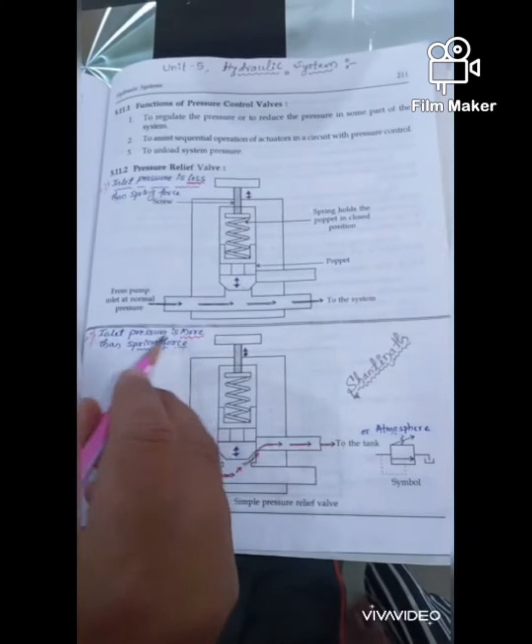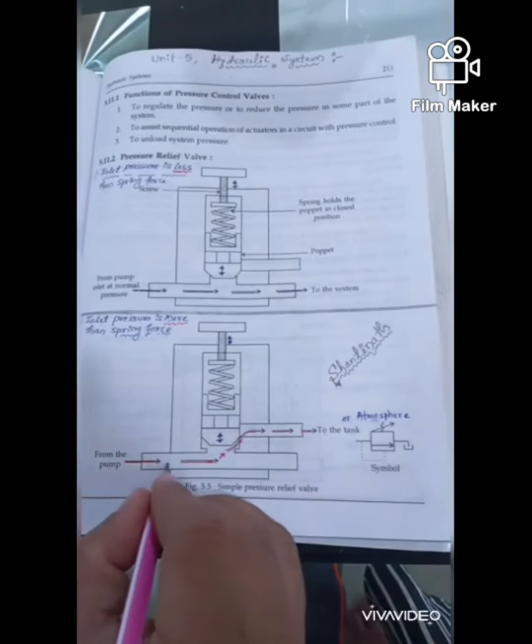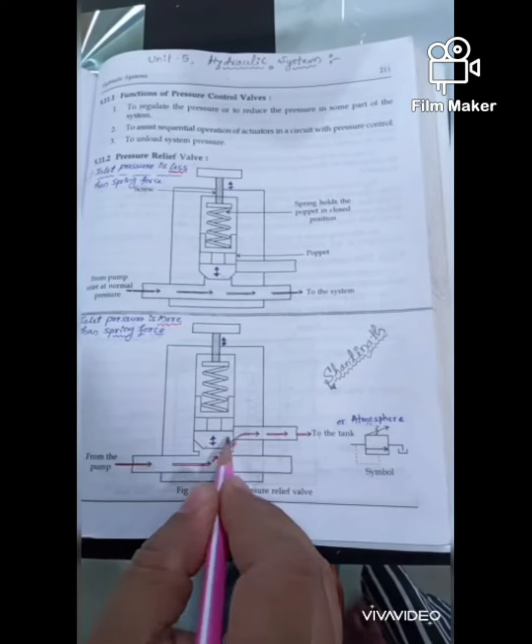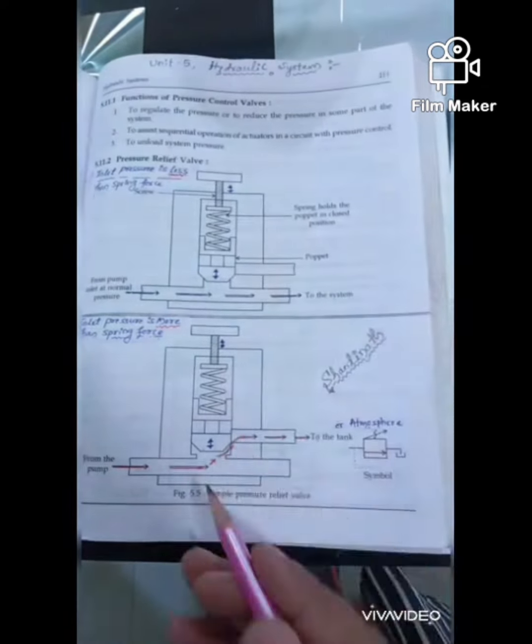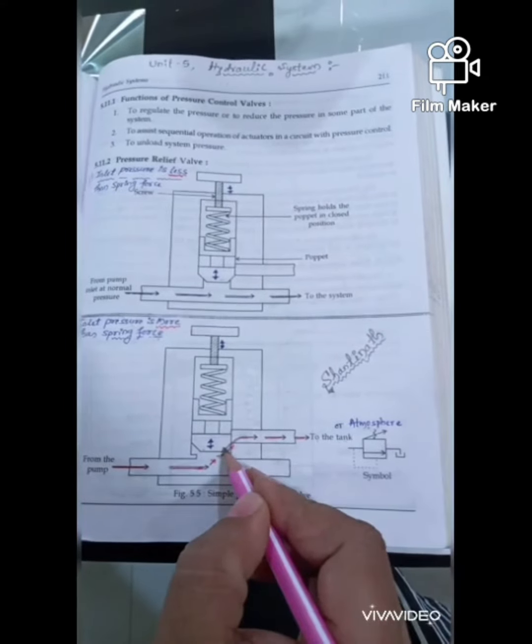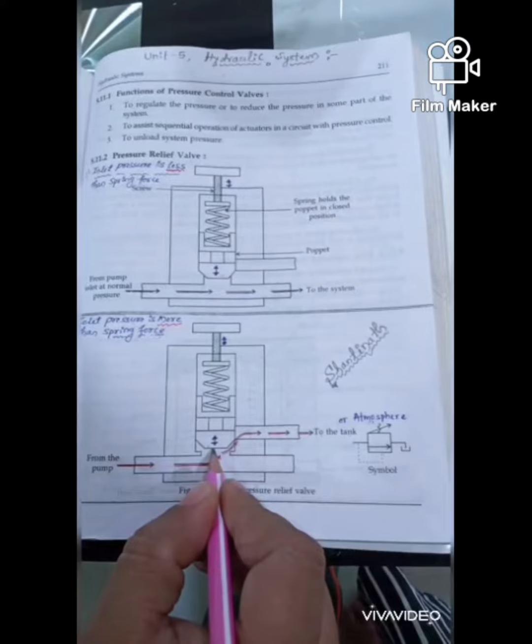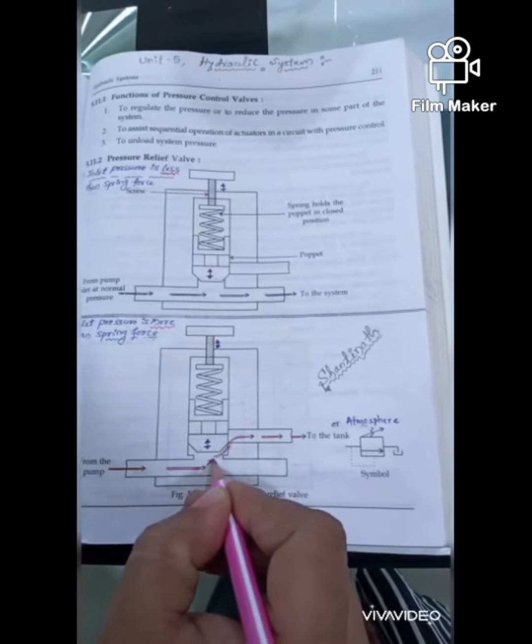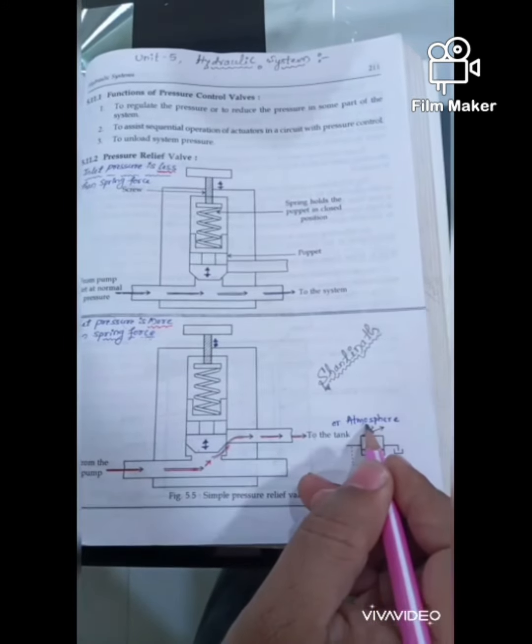In case two, inlet pressure is more than the spring force. When the inlet pressure is more than the spring force, then the valve is said to be open. That is, excessive amount of pressure lifts the puppet so that excessive pressure can be passed out and it is thrown to the atmosphere.